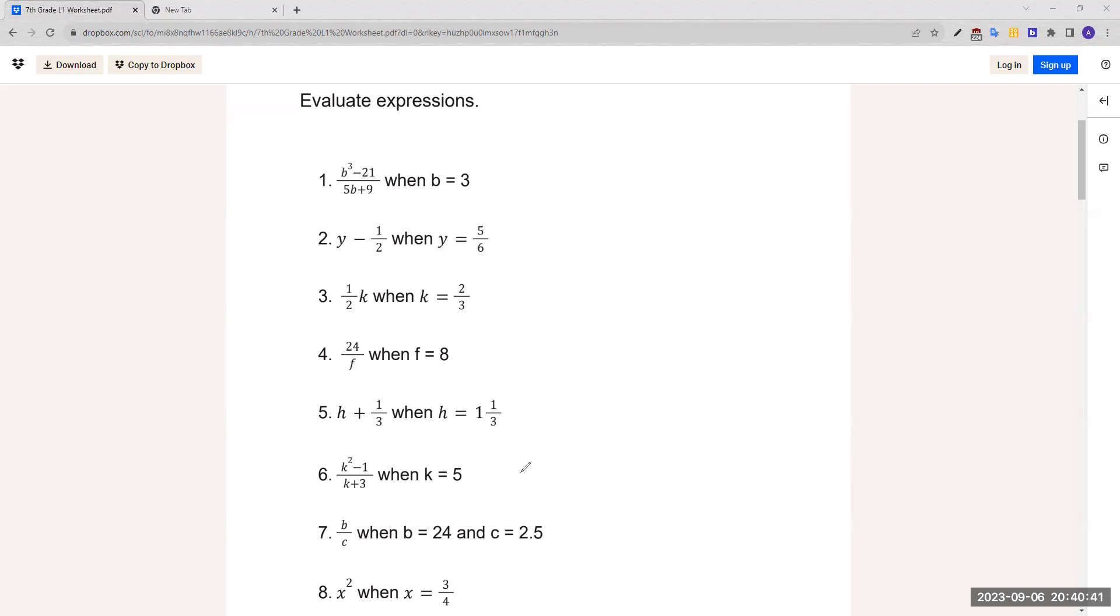For number 6, k squared minus 1 over k plus 3, when k equals 5. We would plug in 5 every time we see a k, which is these two places. 5 squared is just 5 times 5, which is 25. Plugging that back in would be 25 minus 1 over 5 plus 3, which is 8. 25 minus 1 is 24.